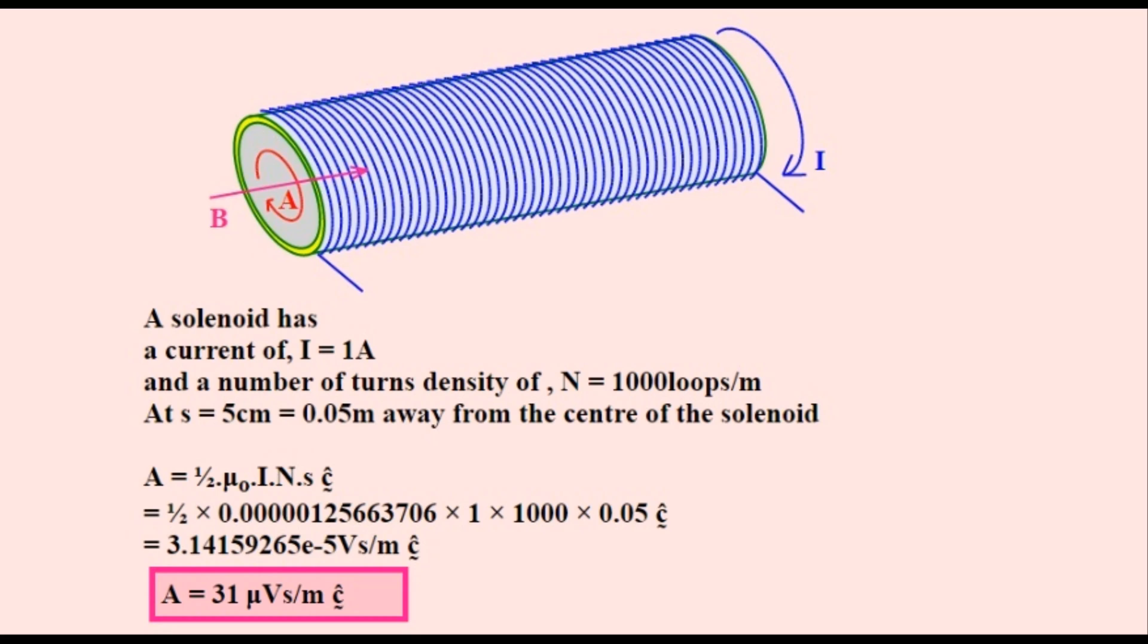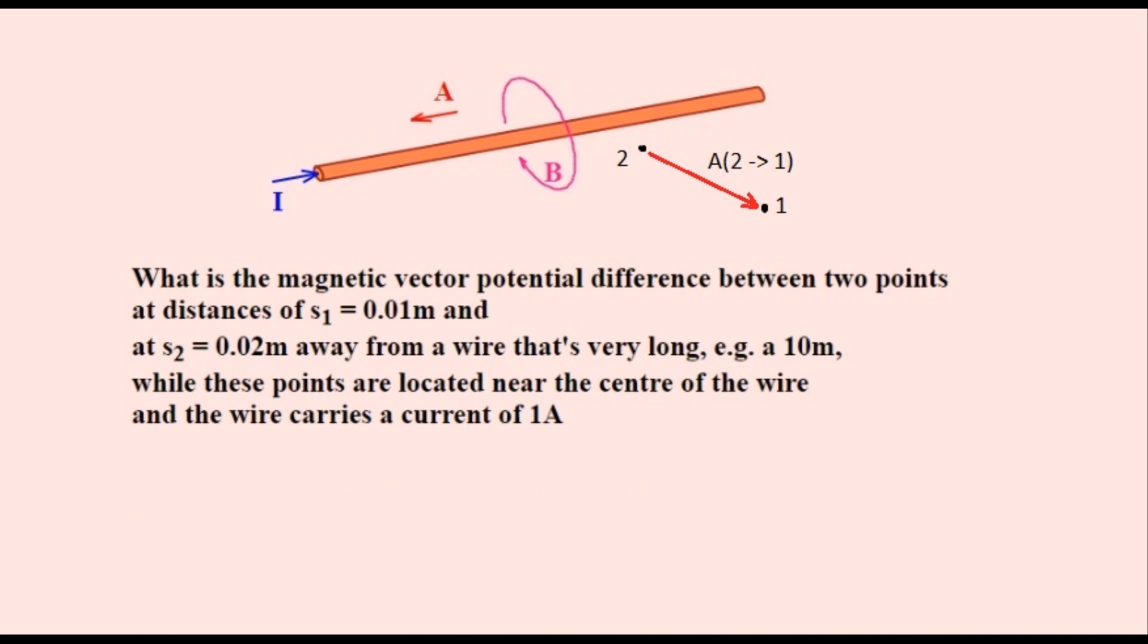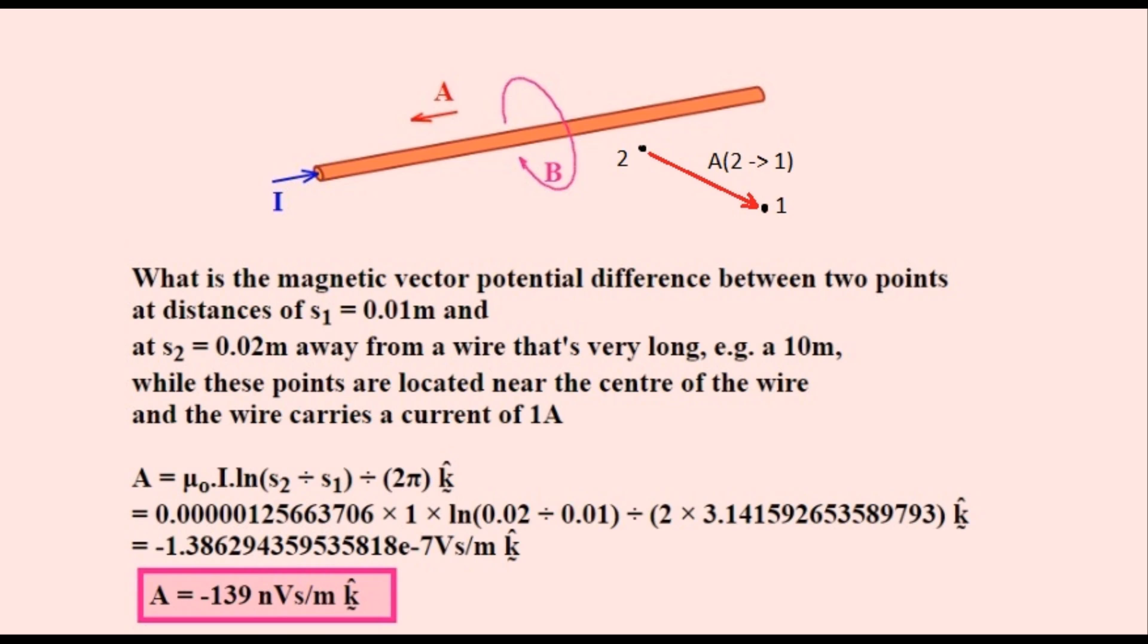The last example is that of the potential difference between two points at varying distances away from a wire conducting an electrical current. This is the equation and it looks nasty because it has a logarithm function in it. Substituting the values in gives us this value of about 100 nano units, the smallest so far. But all these values of A are hovering around the 100 nano to 100 micro units zone.